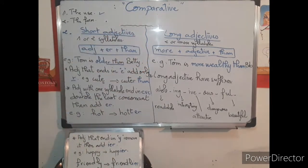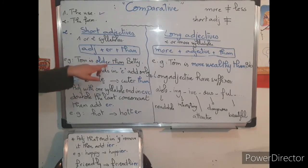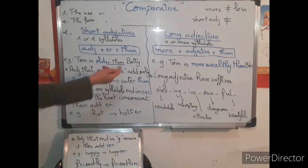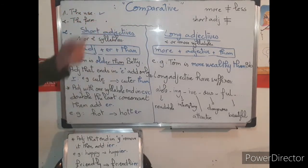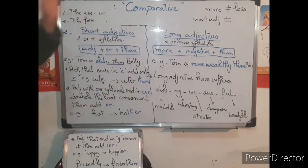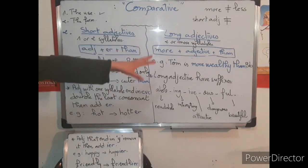This covers the positive comparative, where we compare in a positive way. In a negative comparison, instead of 'more' we use 'less.' For short adjectives, you can also give the opposite adjective — for example, 'Tom is older than Betty,' and the opposite would be 'Betty is younger than Tom.' For long adjectives, use 'less' instead of 'more.'